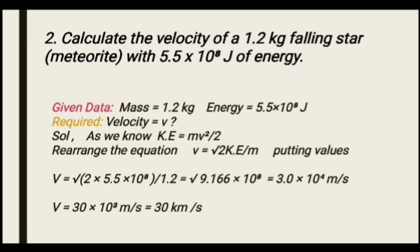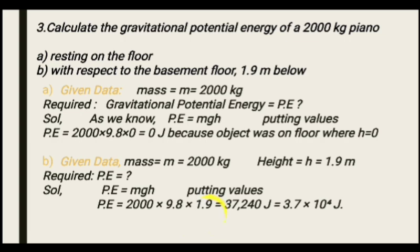Putting in the values: v equals square root of 2 × 5 × 5 × 10 to the power 8, divided by 1 × 2. Simplifying: 9 × 1 × 6 × 10 to the power 8. Taking the square root gives 3 × 3 × 3 × 10 to the power 4, which equals 30 × 10 to the power 3 meters per second, or 30 kilometers per second.